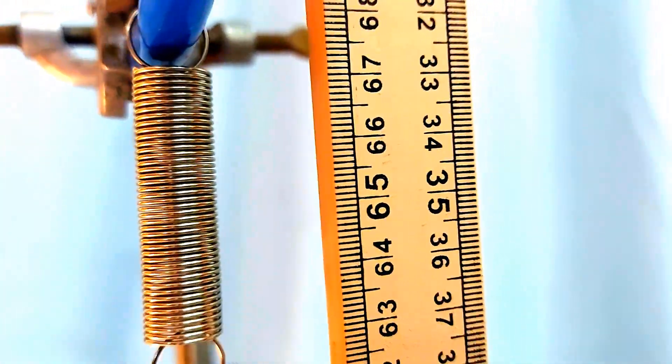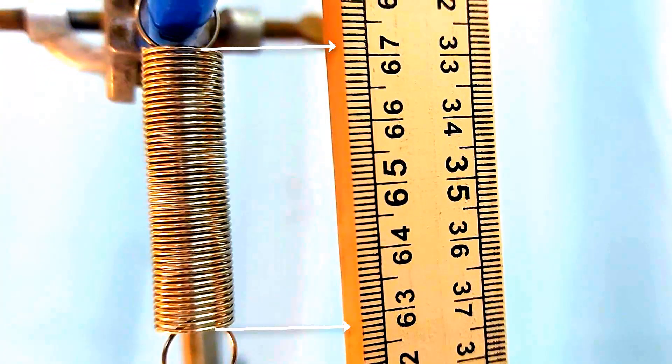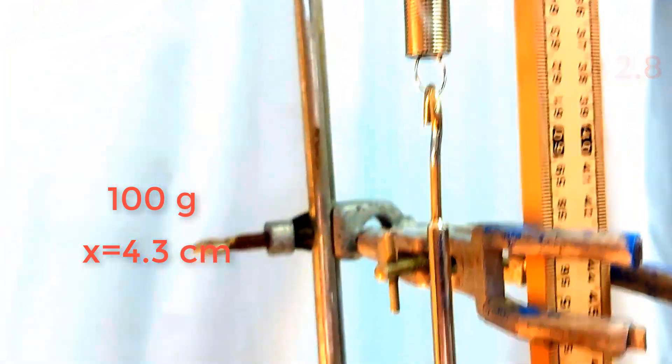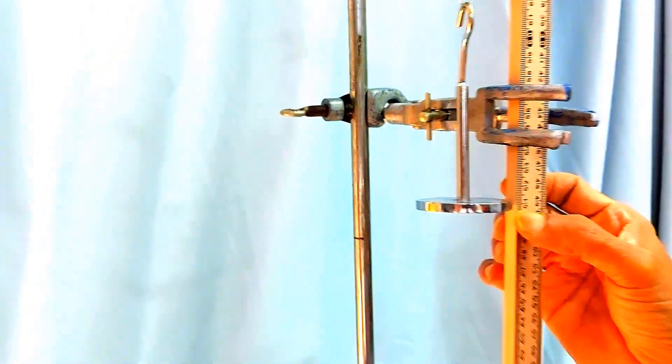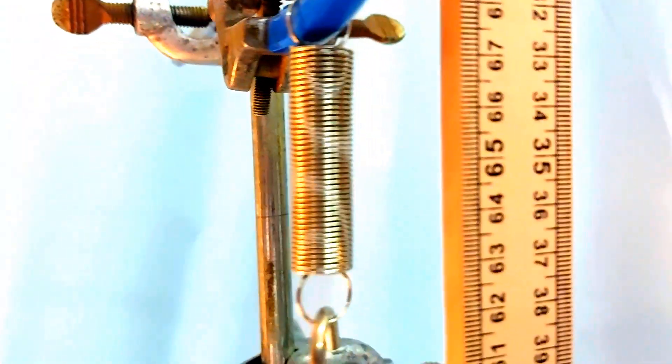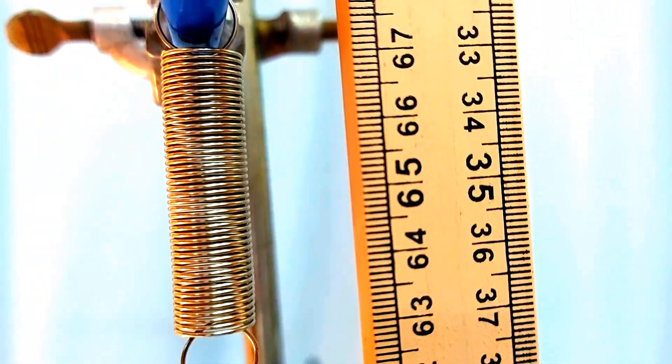Now I'm going to add our first weight: 100 grams, which is equivalent to 1 Newton. Watch closely as the spring stretches under the weight. Here's where you need to be extra careful to prevent parallax errors. Always align your eyes perpendicular to the scale. If you look from an angle, the reading can be way off, and we don't want that, do we?